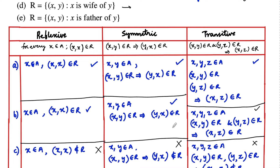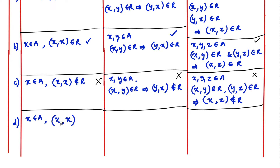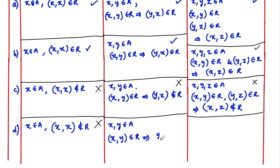Coming to the fourth one: r = {(x, y) such that x is wife of y}. Consider a person x belonging to A — x cannot be the wife of herself, so (x, x) does not belong to r. This is not reflexive. For symmetric: if (x, y) belongs to A such that x is wife of y, then y is not a wife of x — in fact, y is the husband of x. So (y, x) does not belong to r, and hence this relation is not symmetric.